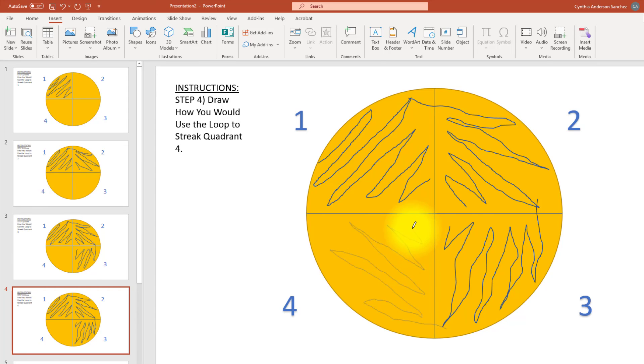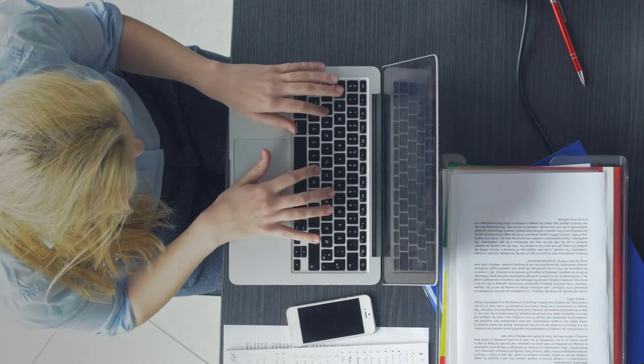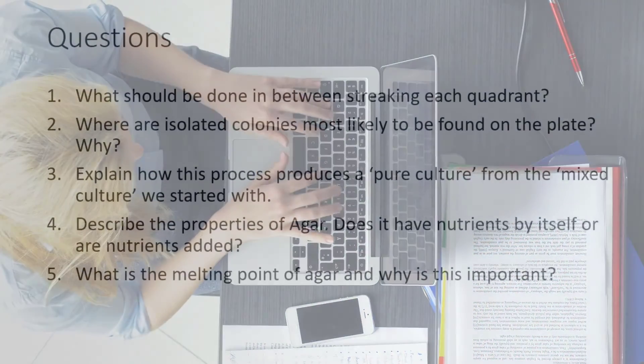For slide five, you will draw how you would expect your colonies to look after a time of incubation. Be sure to note where isolated colonies are most likely to be found. If for some reason you are unable to do the PowerPoint, a free download of PowerPoint along with Microsoft Office is available through the institution. You may also print out the slides and do the drawings by hand. You can then upload your pictures as part of your lab write-up.